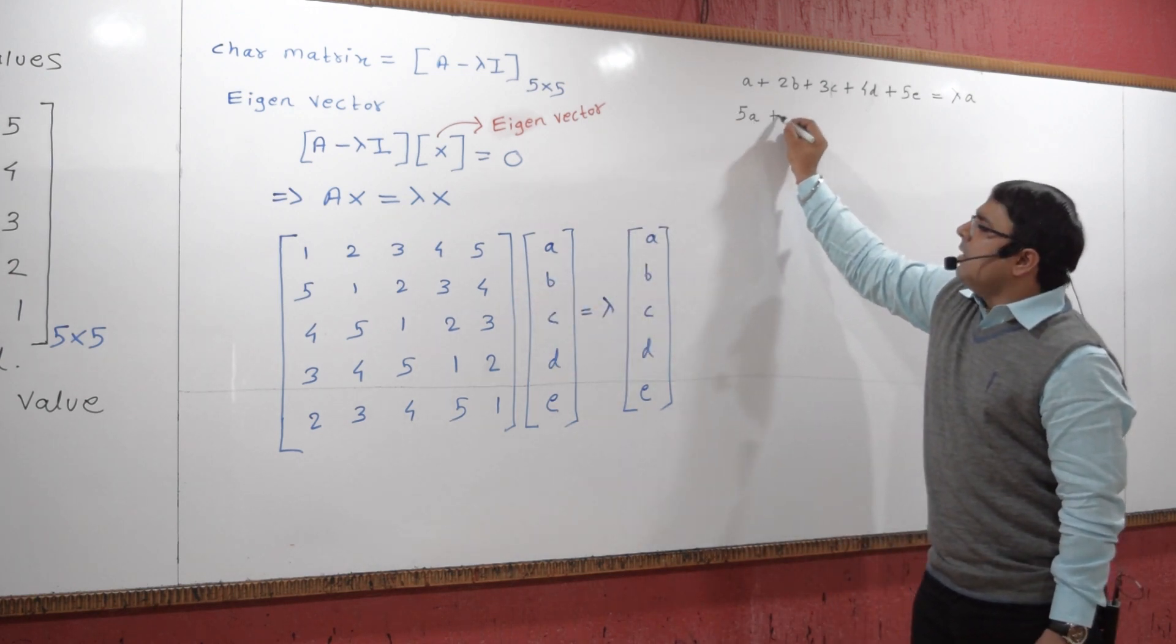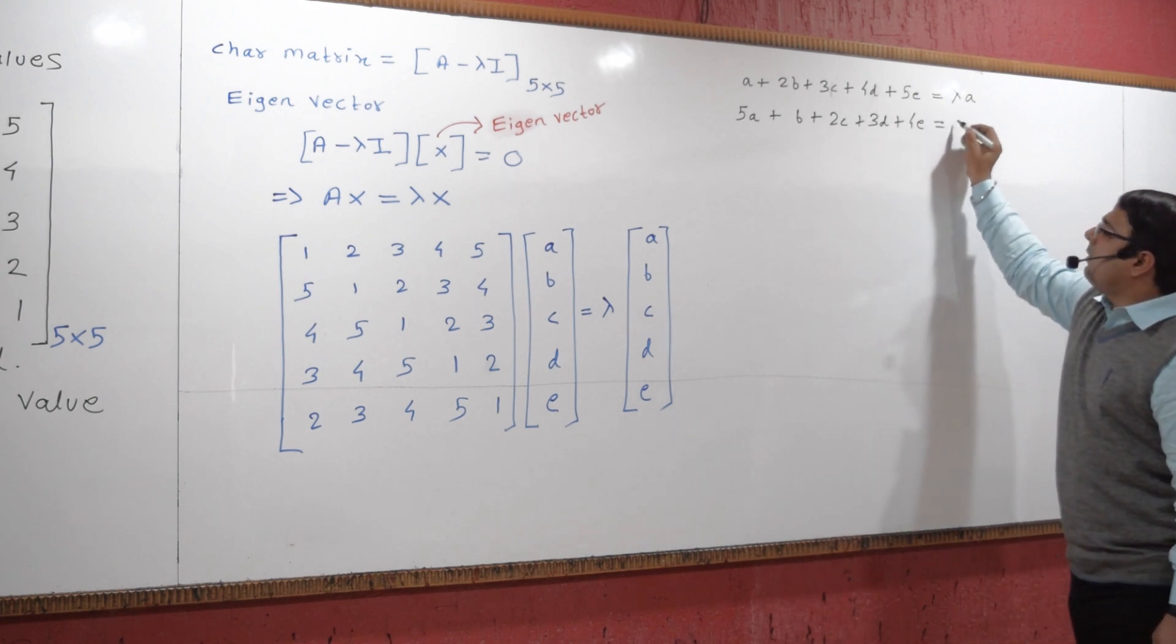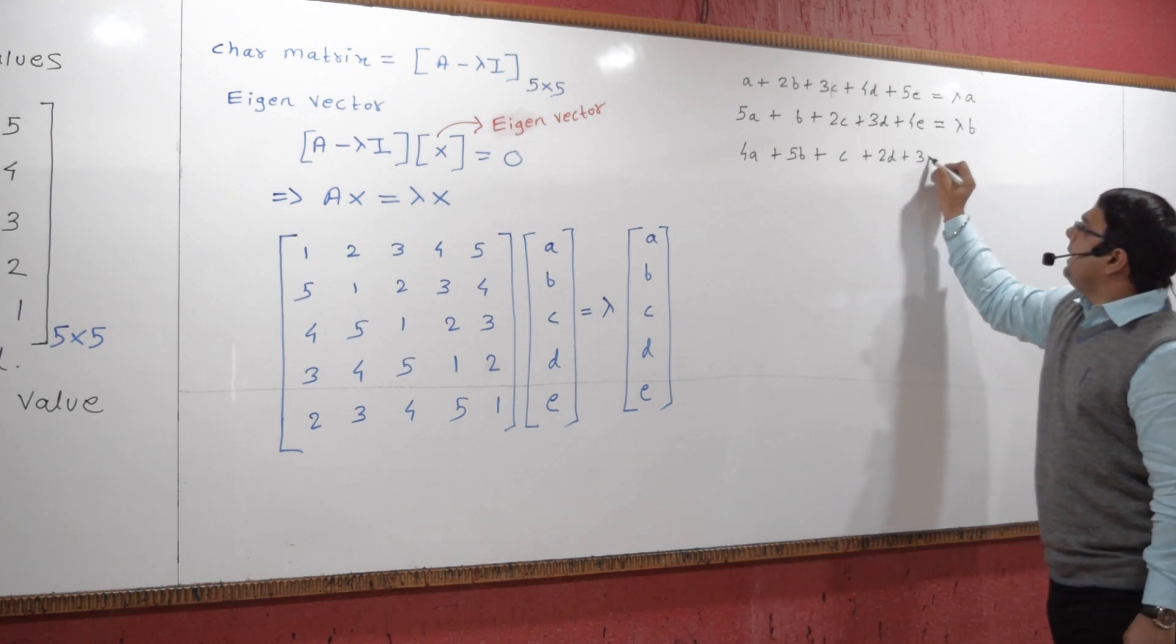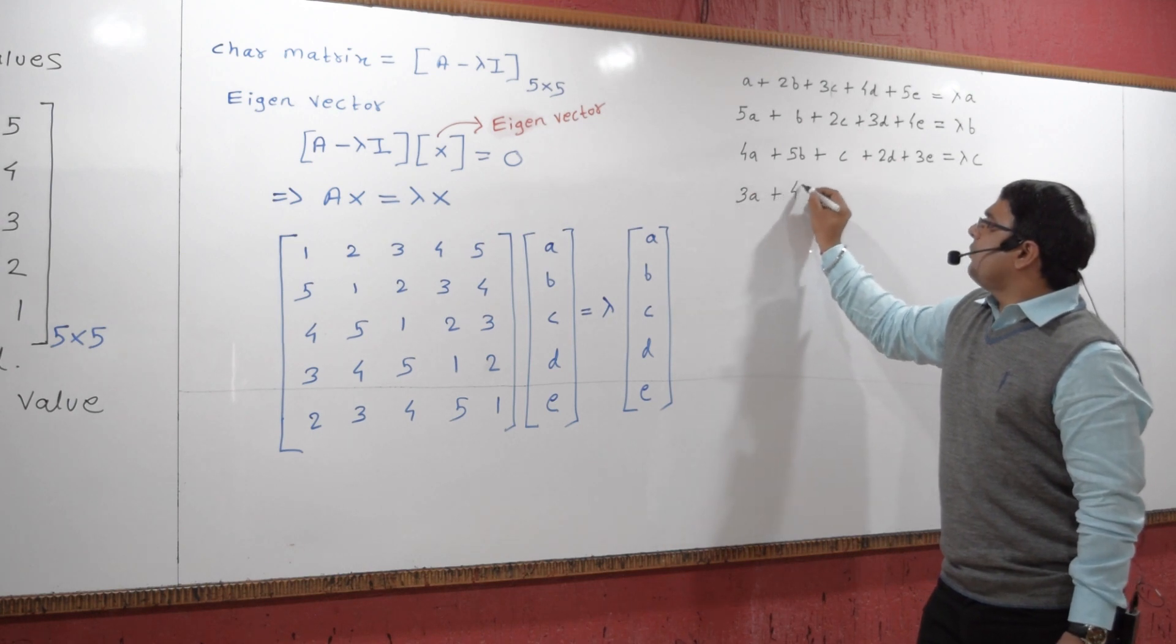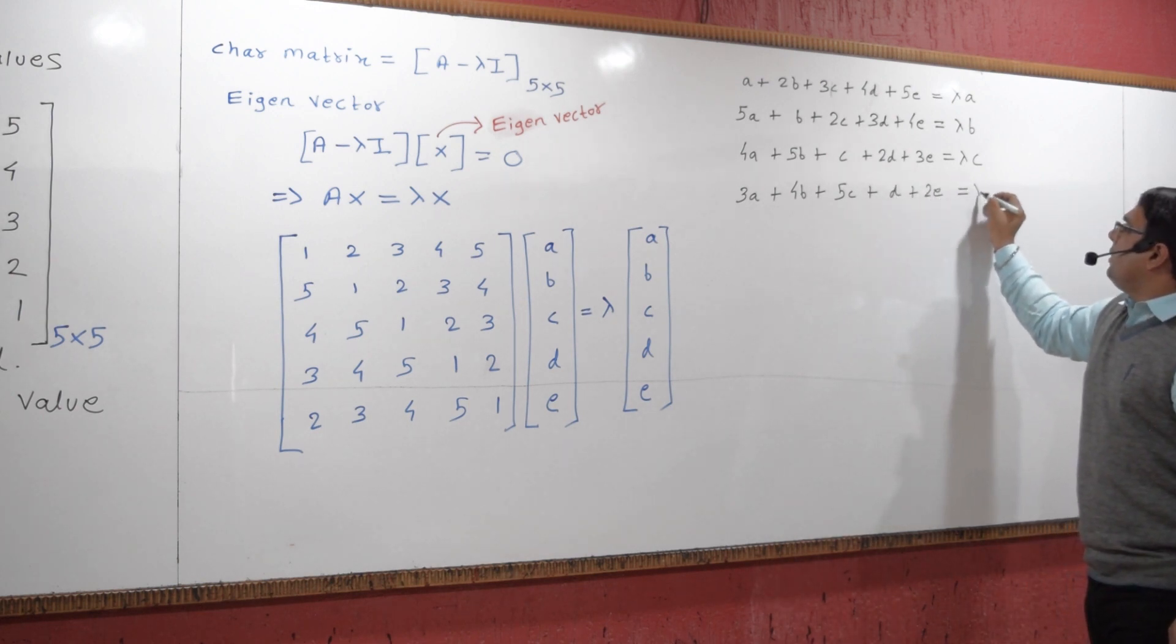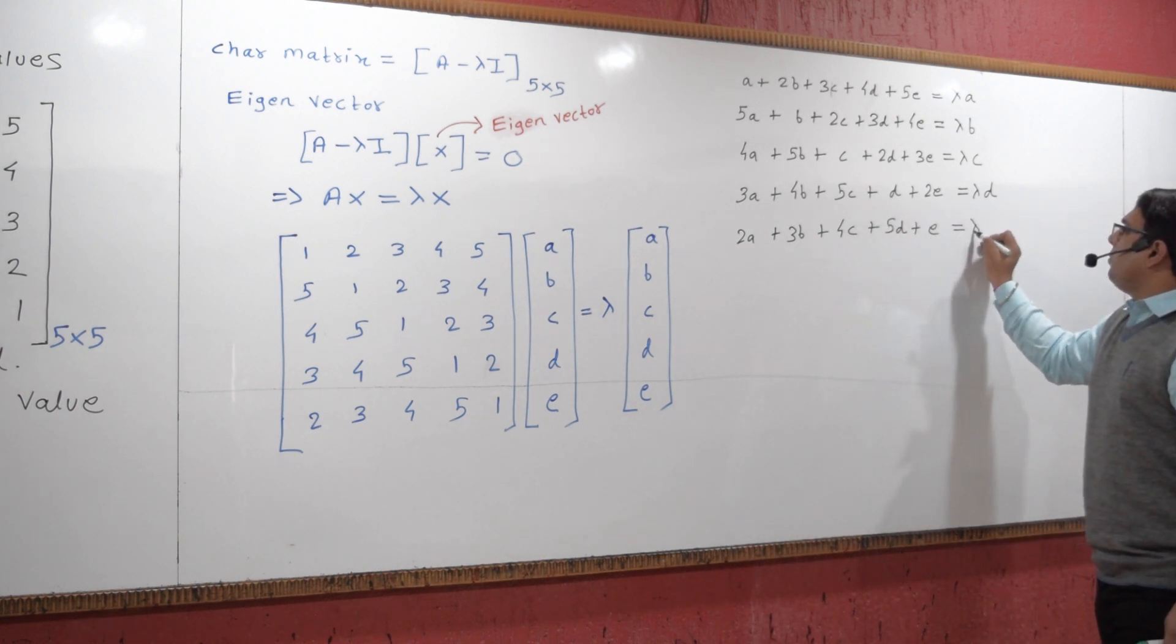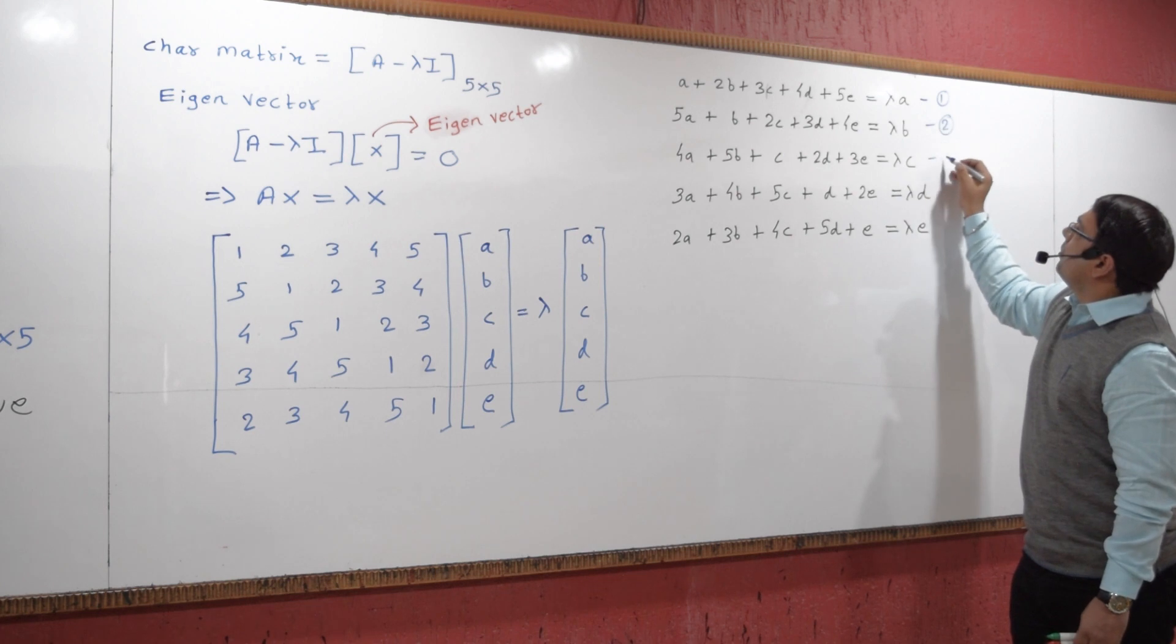Similarly, the second equation gives 5a plus b plus 2c plus 3d plus 4e equals lambda times b. Continuing this pattern for all five equations, we get equations for c, d, and e. Let us name these as equation 1, equation 2, equation 3, equation 4, and equation 5.